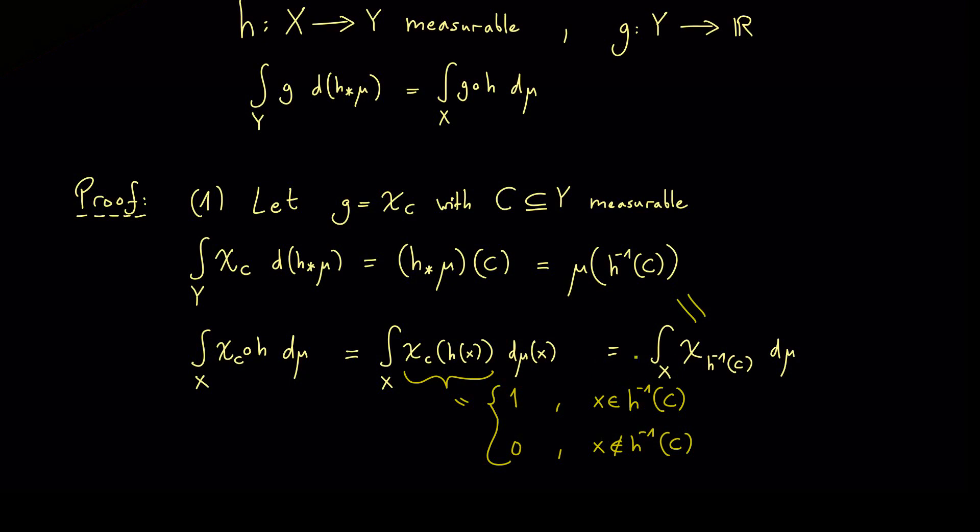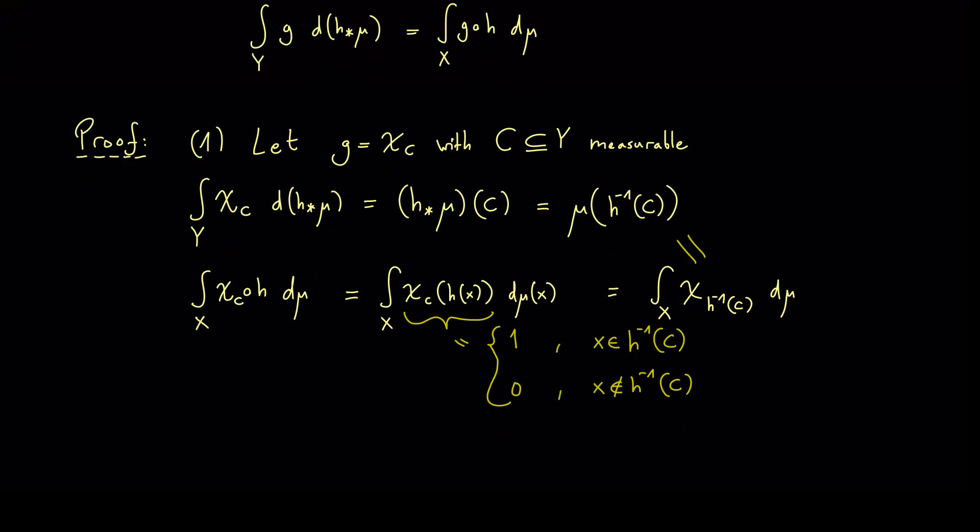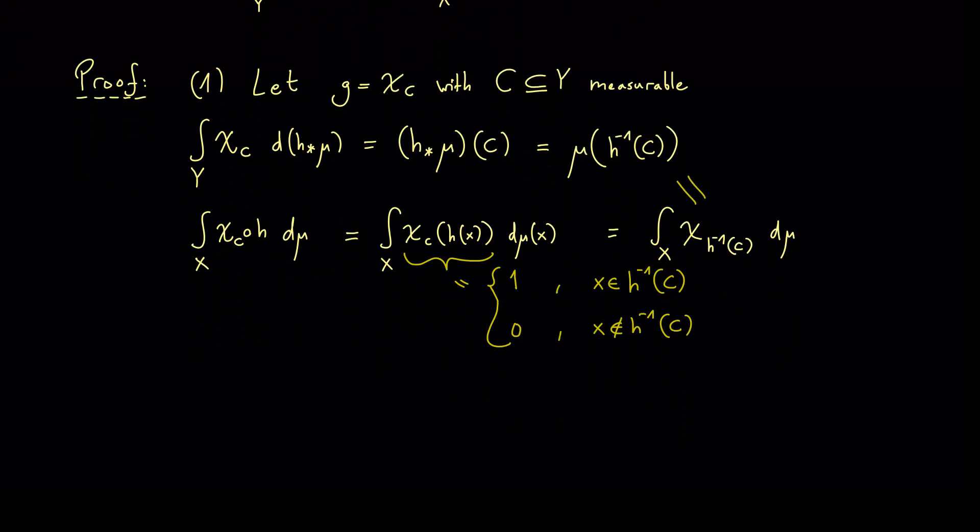To put this in other words you see the left hand side is equal to the right hand side for this simple case of an easy function g. Now we have proven the substitution rule for characteristic functions.